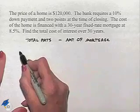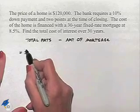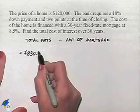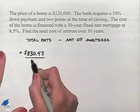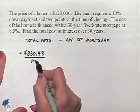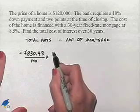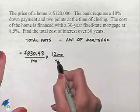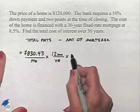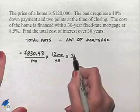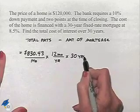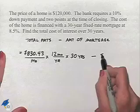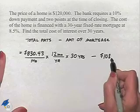From a previous problem, our payments are going to be $830.43 per month. We're going to multiply that times 12 months in one year, and then multiply that times 30 years. And then we'll subtract from that the amount of our mortgage, which is $108,000.